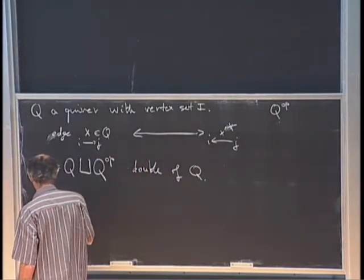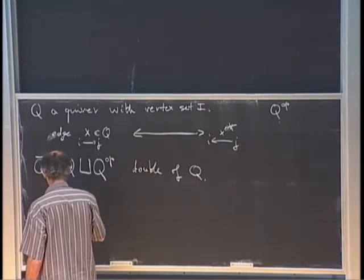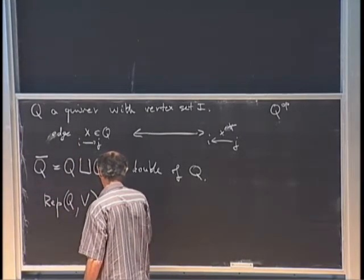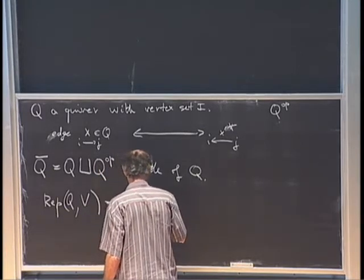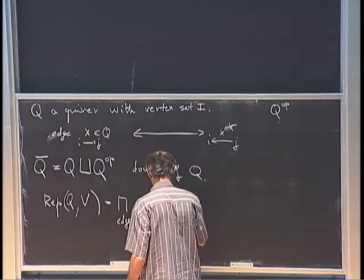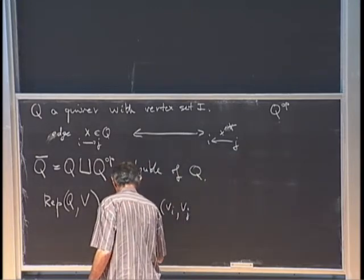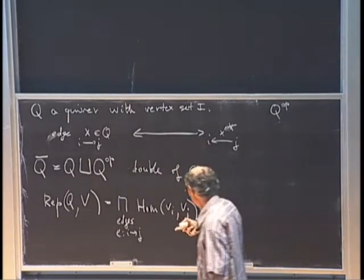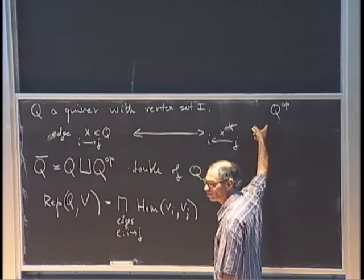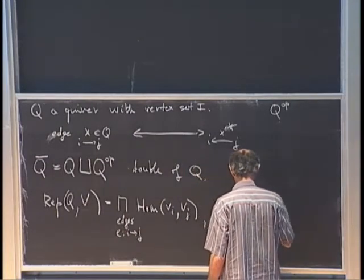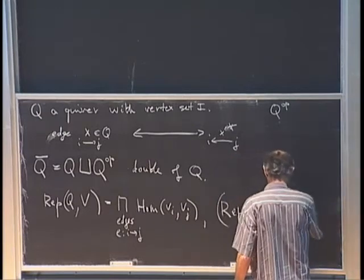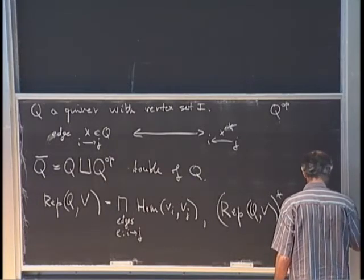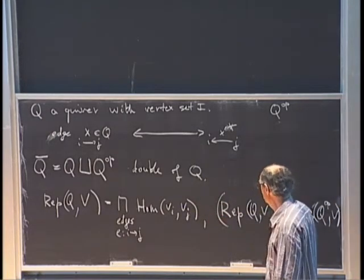Representations of Q in vector space V form a product of Hom spaces over edges from V_i to V_j. The dual space can be identified with Homs in the opposite direction, which corresponds to representations of the opposite quiver. So Rep(Q,V)* is identified with Rep(Q-opposite, V).